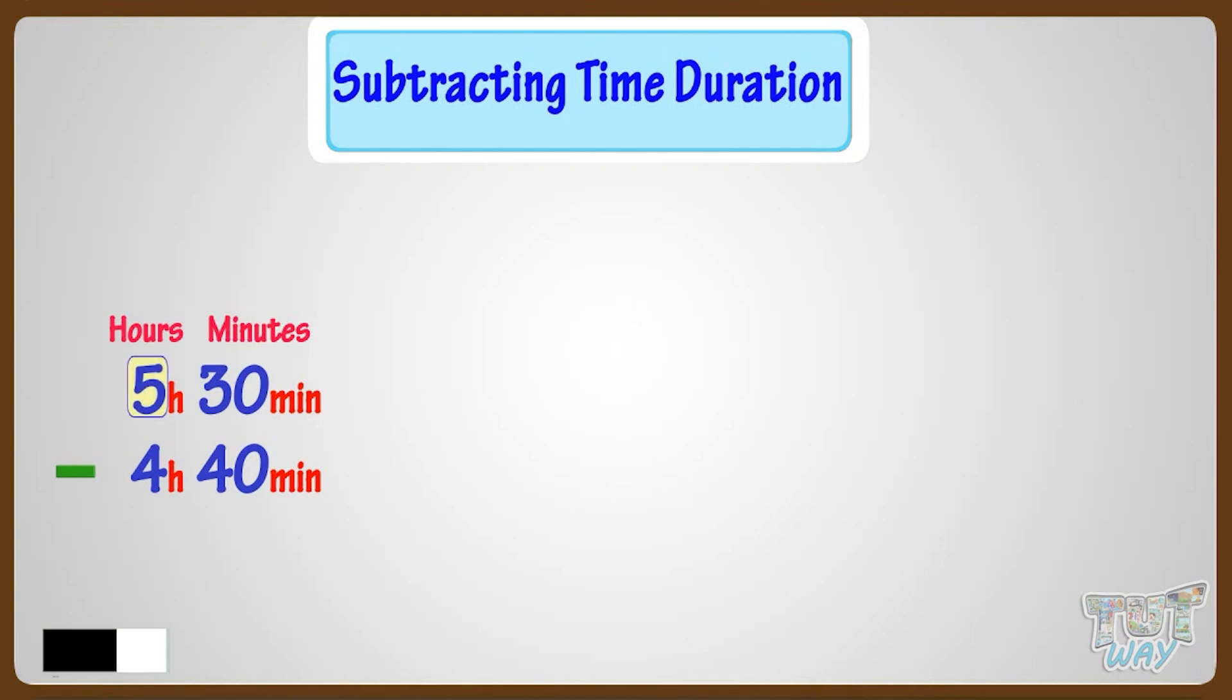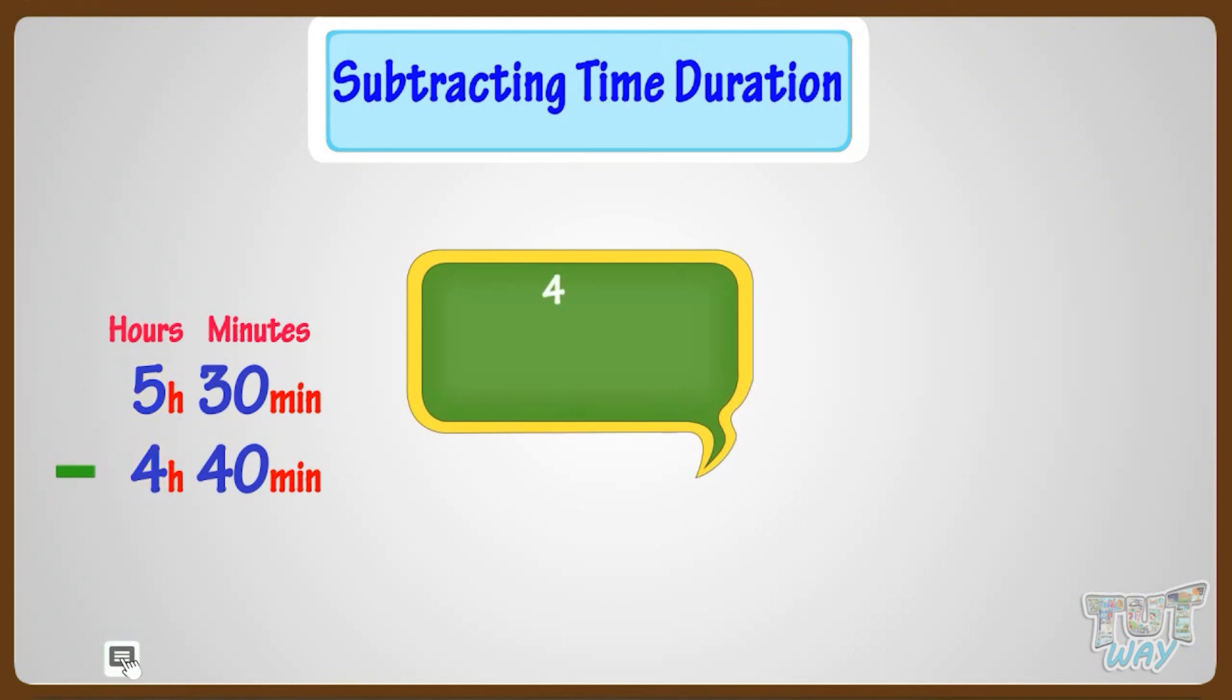We have to subtract hours from hours. Subtracting 4 from 5, we are left with 1 hour. But we have to subtract 40 minutes from 30 minutes.